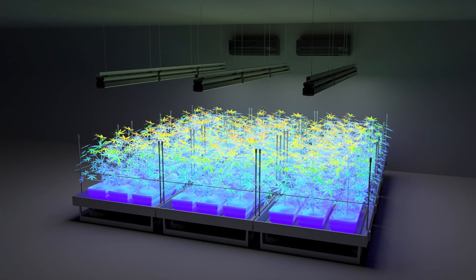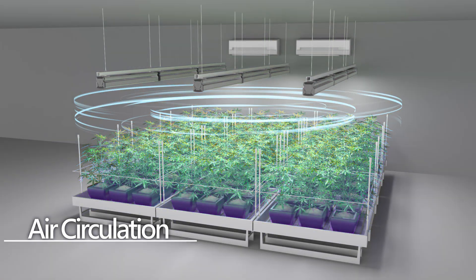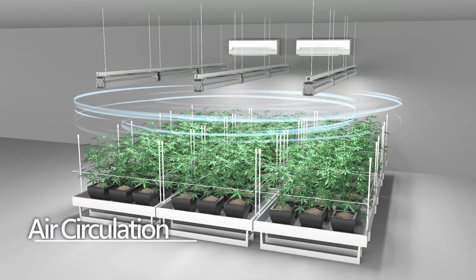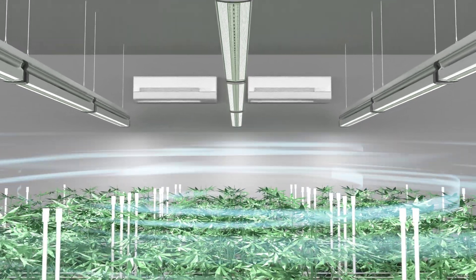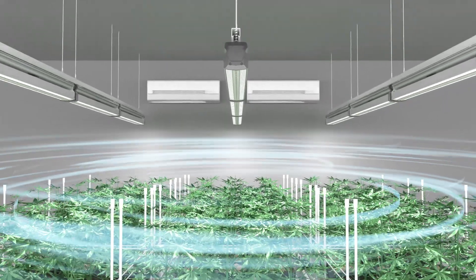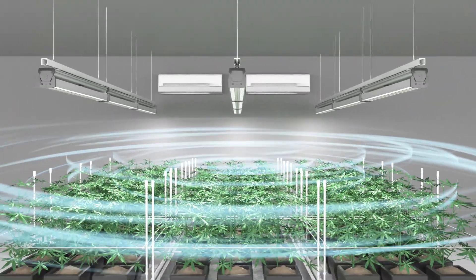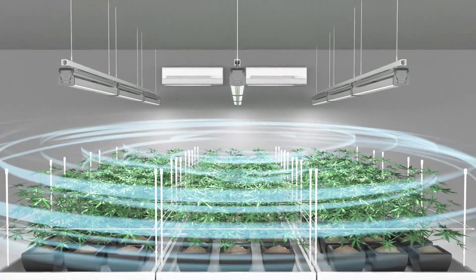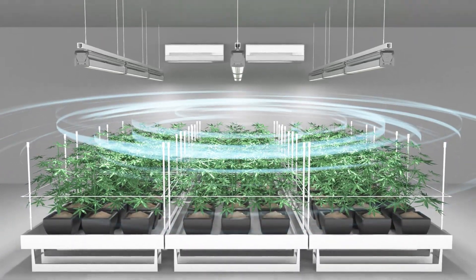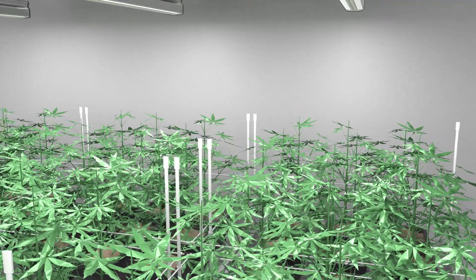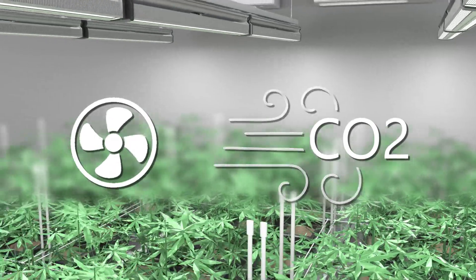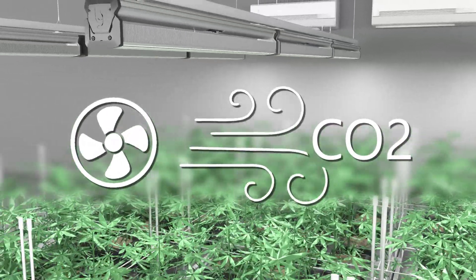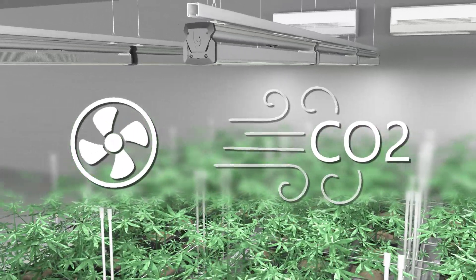A well-designed grow room will have plenty of air circulation to ensure that there are no areas within the growing space where microclimates with cold, hot, humid, dry, or stagnant air exist. Airflow is critical to maintaining fresh air around the plants and to provide a constant flow of CO2 to the stomata on the bottom of the leaves to provide peak photosynthesis rates.